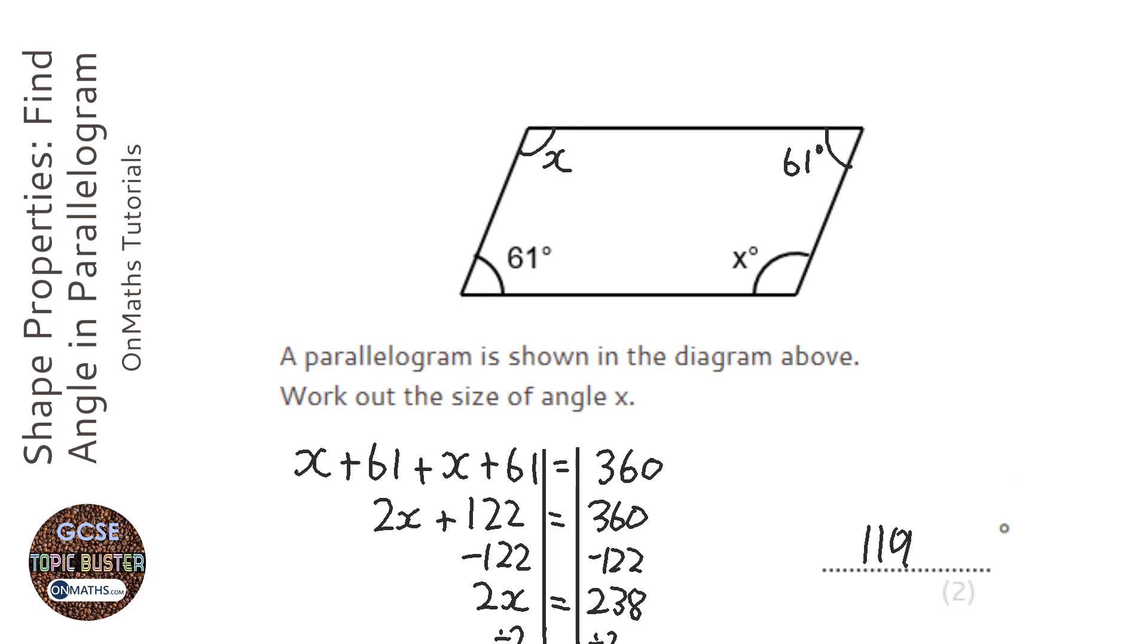Now, we could have also realized that these are a set of parallel sides here, and therefore the 61 degrees and the x are interior, co-interior, or allied angles. So they do have to add up to 180. So I could have done 180 take away 61, which is also 119 degrees.